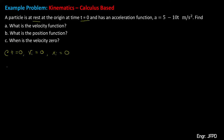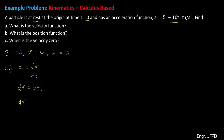To solve for the velocity function, note that the acceleration a can be solved by the derivative of the velocity v with respect to time t. Solving for this equation gives us dv equals the product of a and dt. From the given, the acceleration function is equal to 5 minus 10t meters per second squared. Substituting, dv equals 5 minus 10t dt. To solve for the velocity function v, take the integral of this equation on both sides.